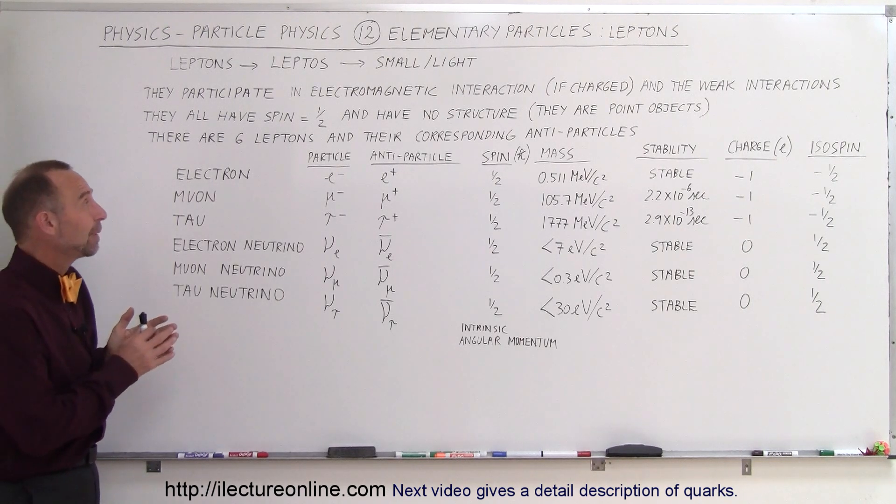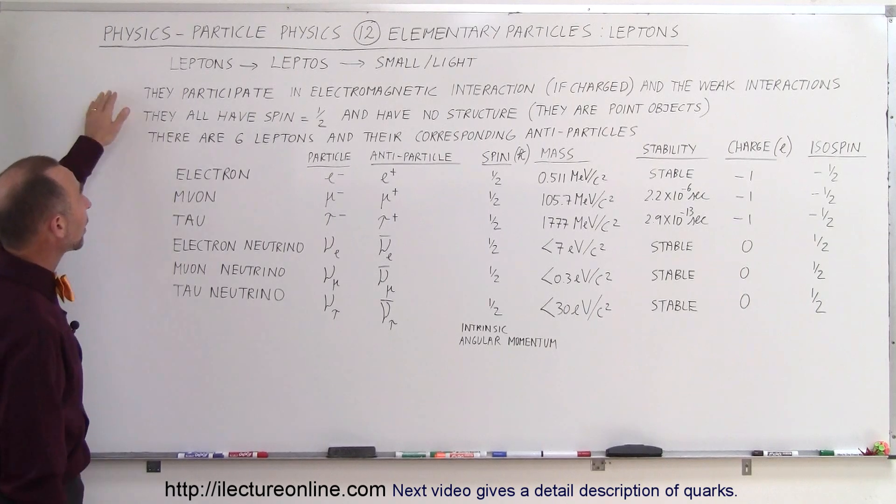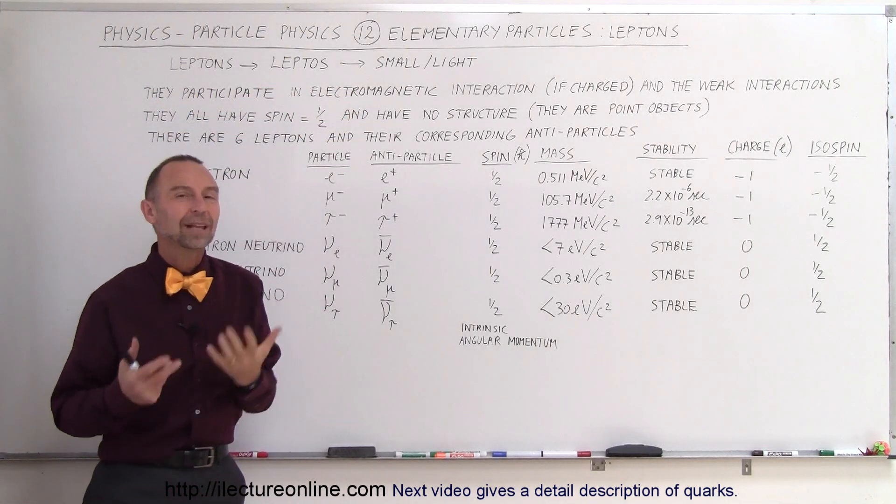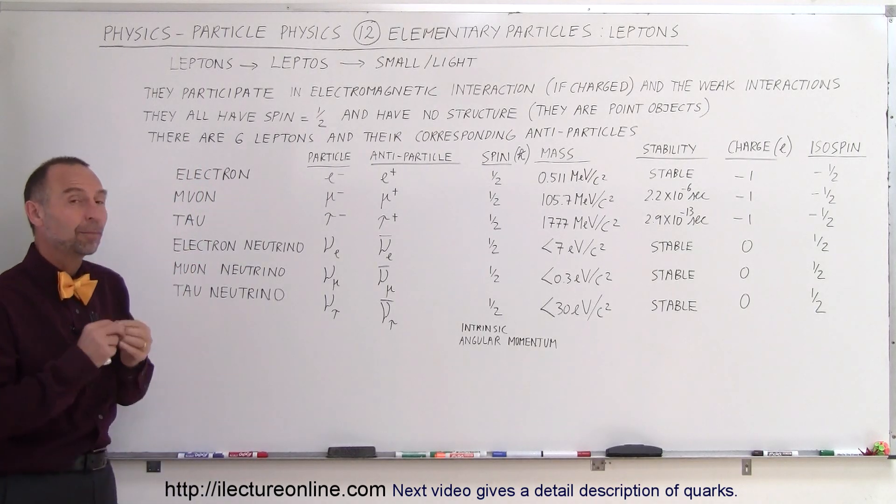Now let's look at some basic properties of leptons. So leptons come from the Greek word leptos, that means small or light. So leptons tend to be very small particles.